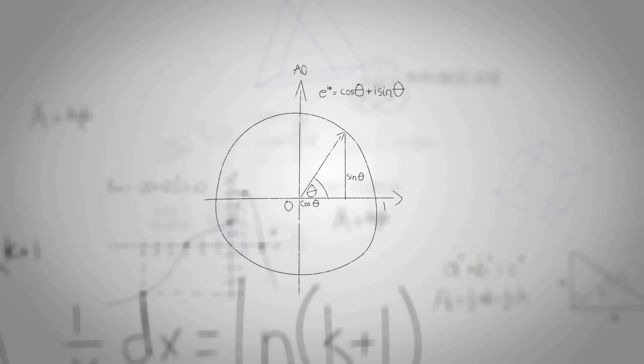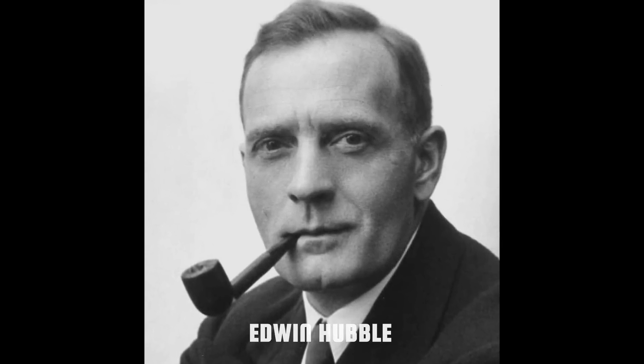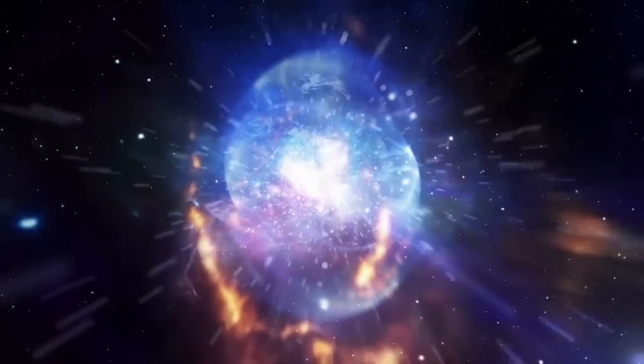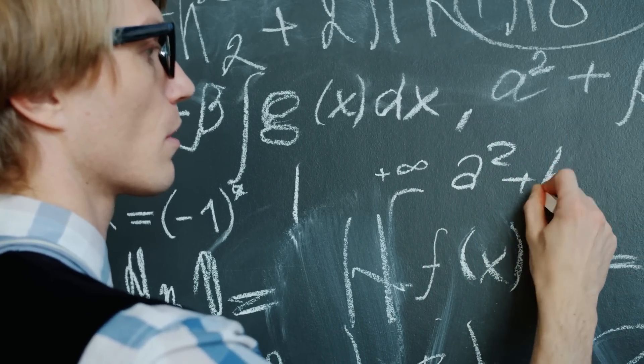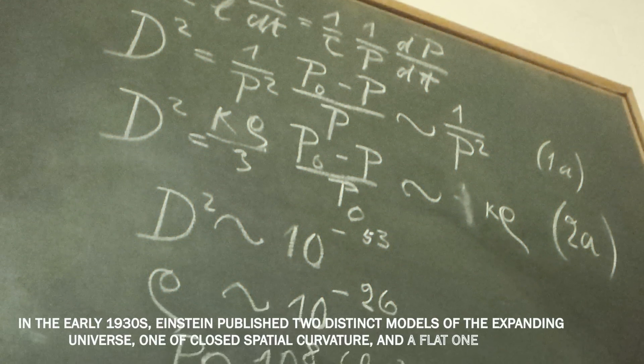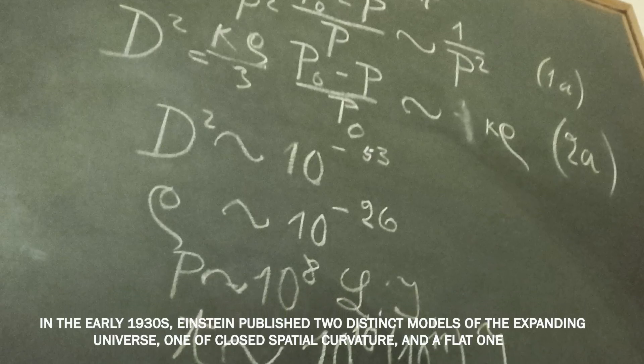But things changed forever in 1929. During the course of that year, astronomer Edwin Hubble published the first definitive evidence of a linear relation between the recession of the nebulae and their radial distance. Many physicists accepted Hubble's results as evidence of a universe that was expanding on the largest scales, and a variety of relativistic time-varying models of the cosmos were proposed. Einstein finally gave up, and in the early 1930s, he published two distinct models of the expanding universe, one of closed spatial curvature and a flat one. In both cases, he decided to abandon the cosmological constant, stating that this term was giving redundant and unstable solutions.